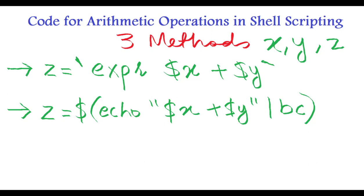This was the second method. Now we have another method and that is z equals to dollar sign double round brackets, and then here you will write dollar x plus dollar y.